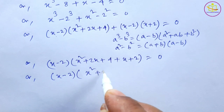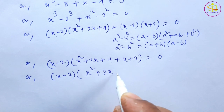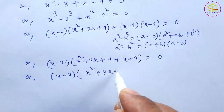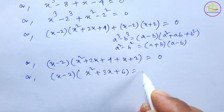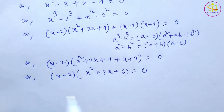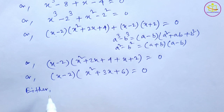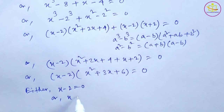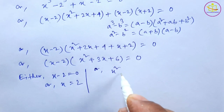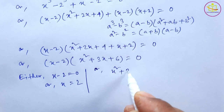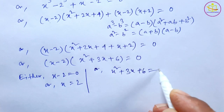Or (x - 2)(x² + 3x + 6) = 0. Either x - 2 = 0, so x = 2, or x² + 3x + 6 = 0.